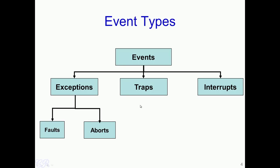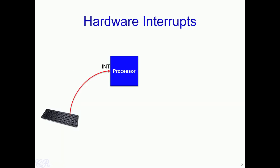This slide shows the various classification of events into exceptions, traps, and interrupts. Exceptions are further classified into faults and aborts. We will now take a specific case of hardware interrupts. In general, processors today have a dedicated pin on the IC known as the interrupt pin, often called the INT pin or in some processors the INTR pin. Devices such as the keyboard are connected to the processor through the INT pin, and when a key is pressed, it results in an interrupt being generated to the processor.